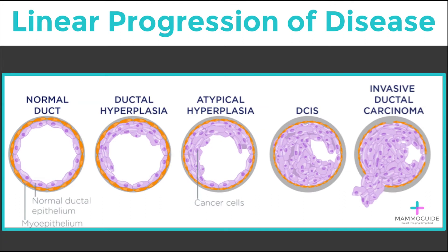A simplified system for understanding how breast cancer begins and progresses is the linear progression model of disease. A normal duct within the terminal ductal lobular unit is composed of a thin layer of ductal epithelium surrounded by a myoepithelial layer. If the normal ductal epithelium thickens with more cells forming, this is called ductal hyperplasia, or usual duct hyperplasia.